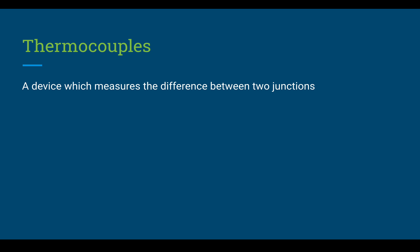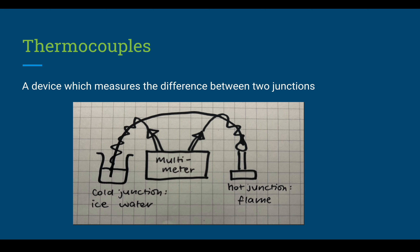The last part of this unit is thermocouples, which are devices that measure the difference between two junctions. In a simplified diagram, you have two junctions — one hot and one cold — with a multimeter in the middle that measures the voltage. The greater the difference between the hot and cold junction, the larger the voltage produced, allowing you to measure the difference in temperature between the two.